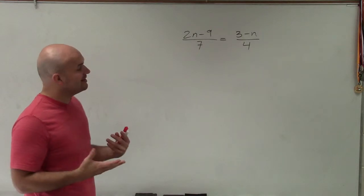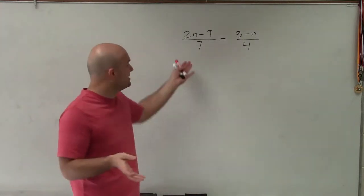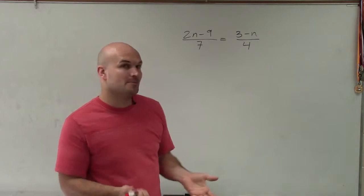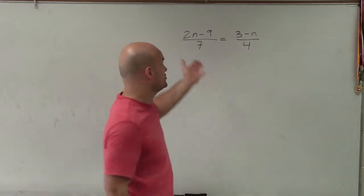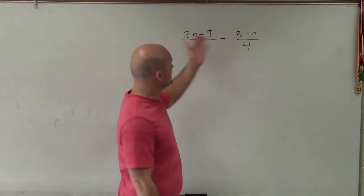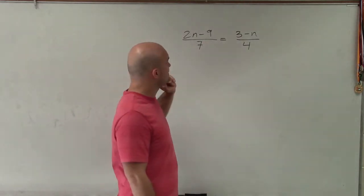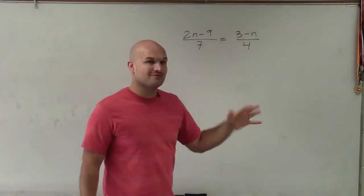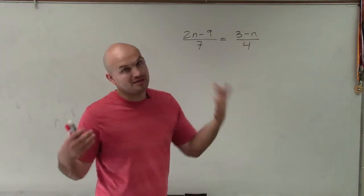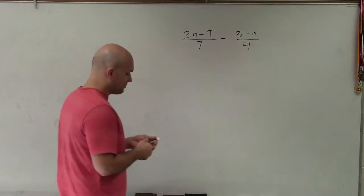So what I want to do is get rid of these fractions — get rid of the 7 and the 4 on the bottom. There are a couple of different ways. You can multiply by the LCD on both sides, or you can apply the cross product, which a lot of students like to do as well.